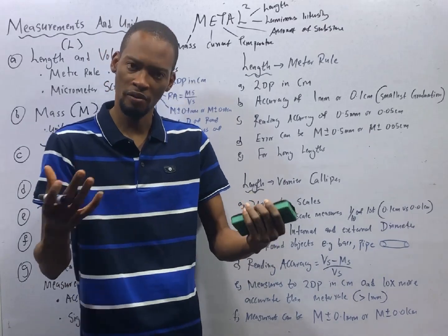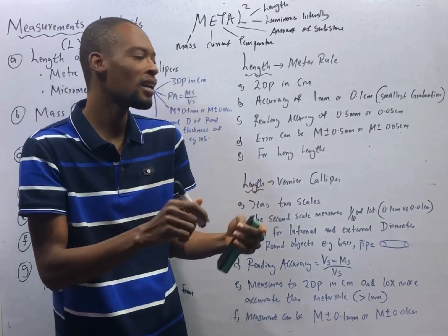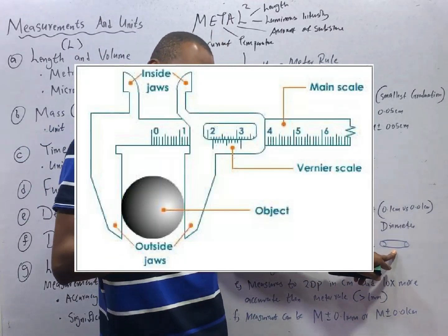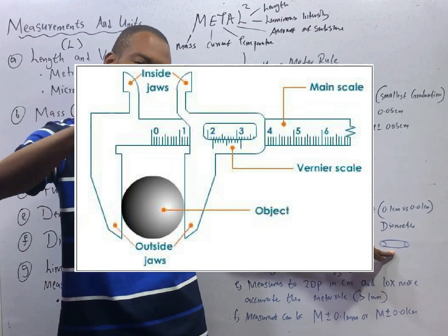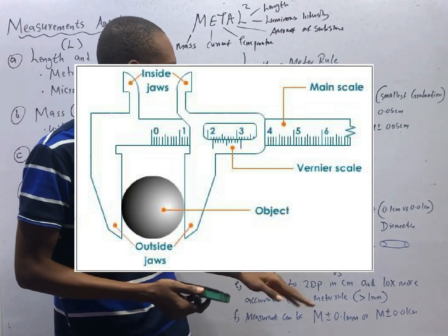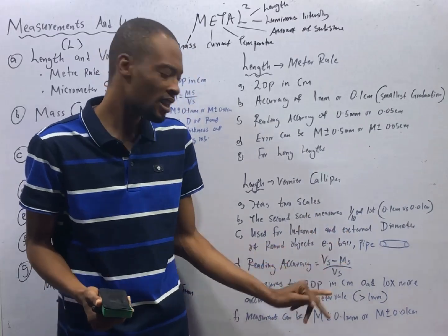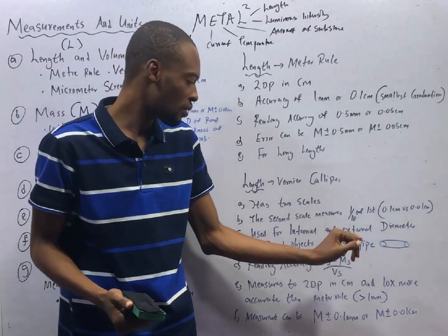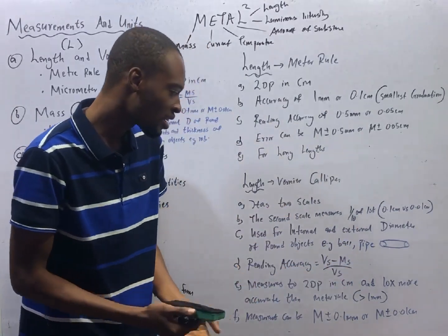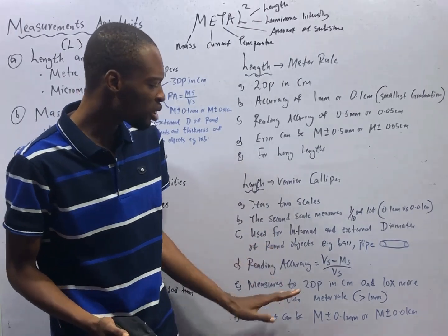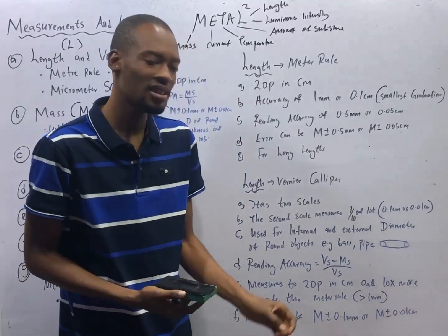You can measure both internal and external diameters using a vernier caliper — for example, a ball or a pipe, which has a round outside and round inside. The reading accuracy of a vernier caliper is found by: (vernier scale division minus main scale division) over the vernier scale. Vernier caliper measures to two decimal places in centimeter and is ten times more accurate than the meter rule.